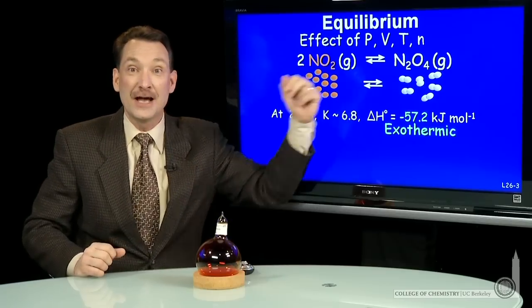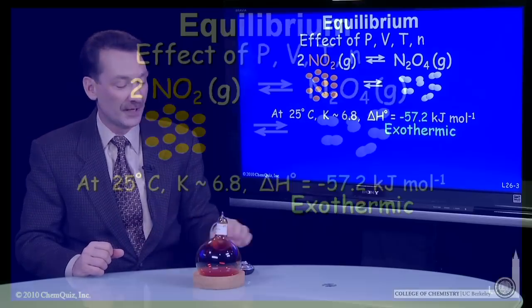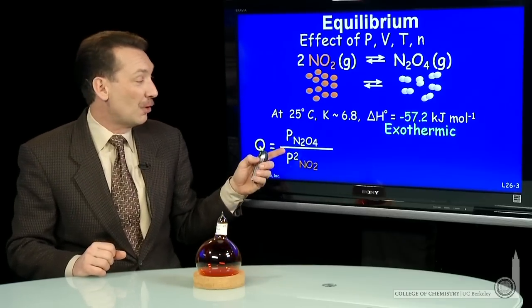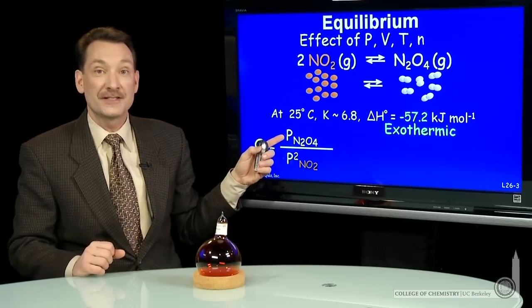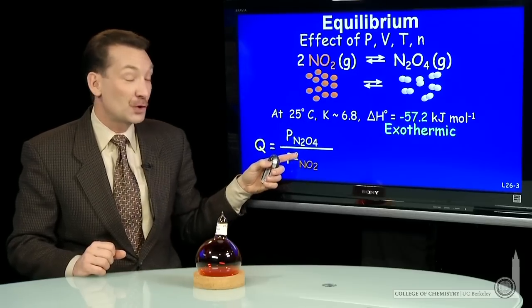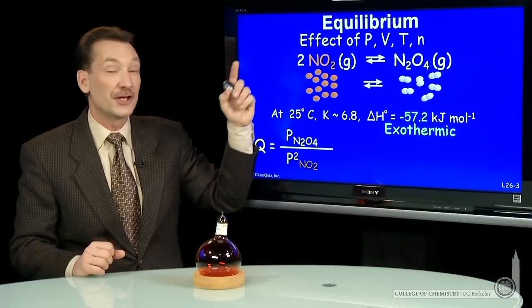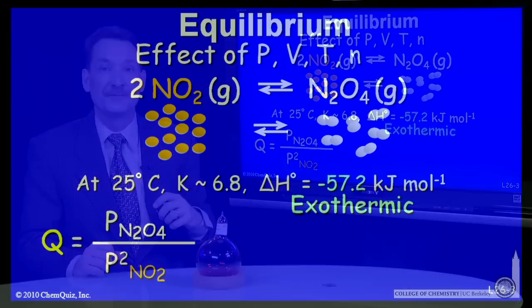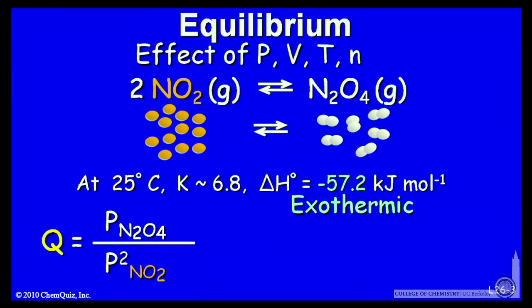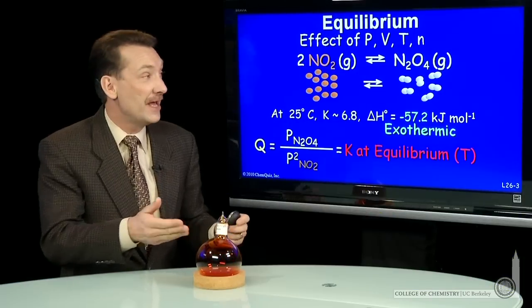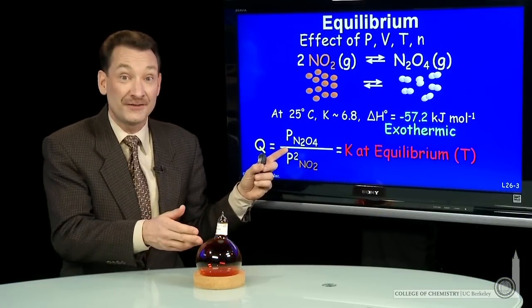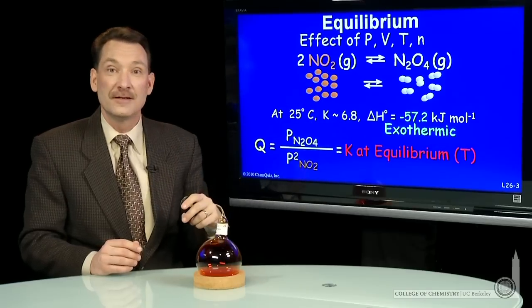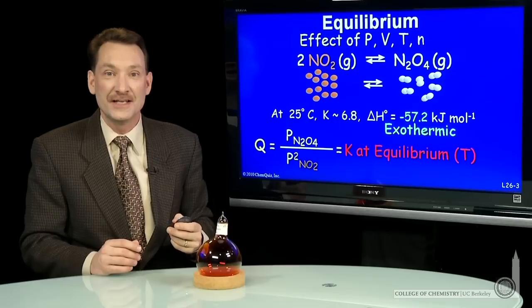So this is bond making, a bond formation. That's exothermic. I can write the expression for the reaction quotient, the pressure of the products, N2O4, over the pressure squared of the reactants, squared because the stoichiometric coefficients appear as powers in my reaction quotient expressions. This reaction quotient expression will equal K 6.8 at 25 degrees C at equilibrium. If we measured the pressure of N2O4 here and NO2 in this flask and formed this ratio, we would get about 6.8, because we're at about 25 degrees C here in the studio.